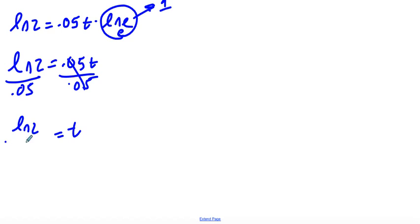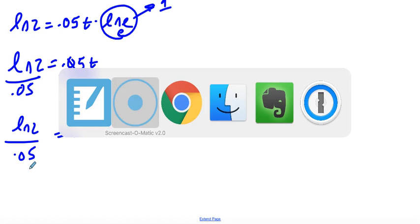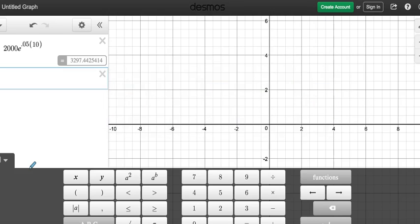So that is our exact answer. If we want to get our time, let's put that in our calculator. We'll do ln of 2 divided by 0.05. Cool. So it's going to take about 13.86 years. That's how long it would take us. Exactly. Thank you.